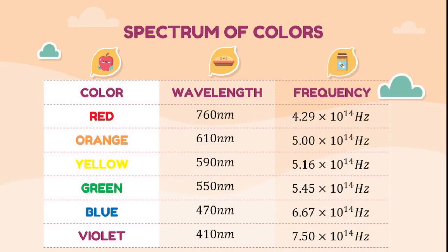The dispersed light resulted in different colors with varying wavelengths and frequencies — red, orange, yellow, green, blue, and violet. We can observe through this table that red has the longest wavelength, measuring 760 nanometers, while the shortest wavelength belongs to violet at 410 nanometers. However, it differs when it comes to frequency: red has only 4.29 × 10¹⁴ Hz, while violet has 7.50 × 10¹⁴ Hz.